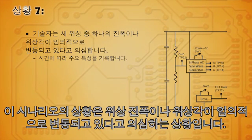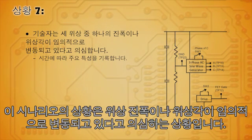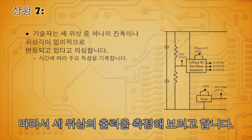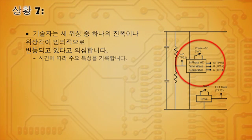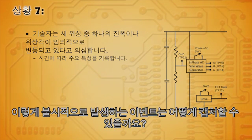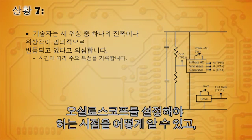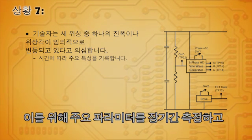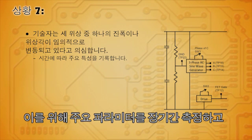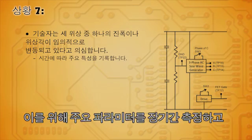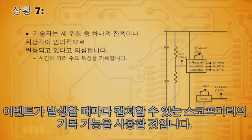In this scenario, we suspect a phase amplitude or phase angle is randomly changing, so we're going to measure the output of the three phases. The problem we'll be trying to solve happens randomly. So how do we capture that event? How will we know when to set up the oscilloscope and be sure we're watching when the event occurs? For that, we'll use the scope meter's recording capabilities to measure our key parameters over a long period of time and capture the event whenever it happens.